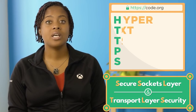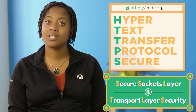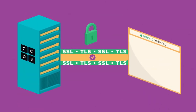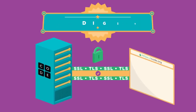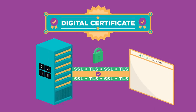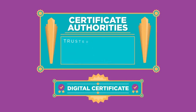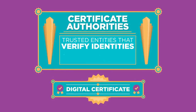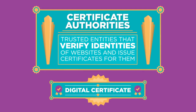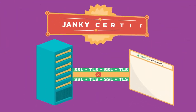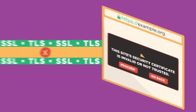The HTTPS protocol ensures that your HTTP requests are secure and protected. When a website asks your browser to engage in a secure connection, it first provides a digital certificate, which is like an official ID card proving that it's the website it claims to be. Digital certificates are published by certificate authorities, which are trusted entities that verify the identities of websites and issue certificates for them, just like a government can issue IDs or passports. If a website tries to start a secure connection without a properly issued digital certificate, your browser will warn you.